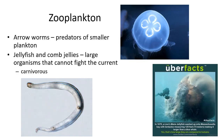Larger zooplankton include arrowworms, which are predators of smaller plankton, and jellyfish, comb jellies. As mentioned before, these are larger organisms. Some can be very long and large and float around in the ocean — jellyfish can become quite massive. They float around trying to capture other types of plankton in their life cycle.